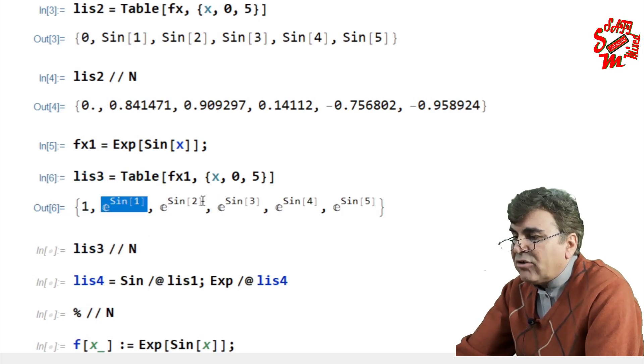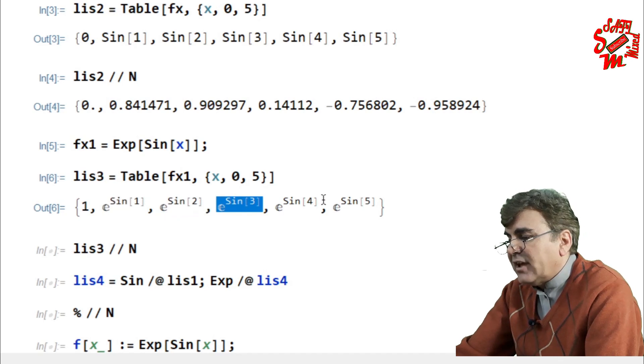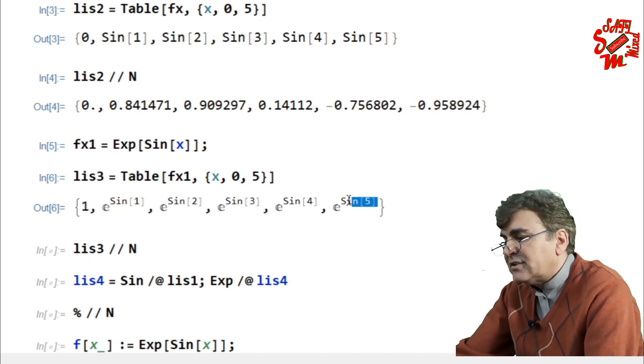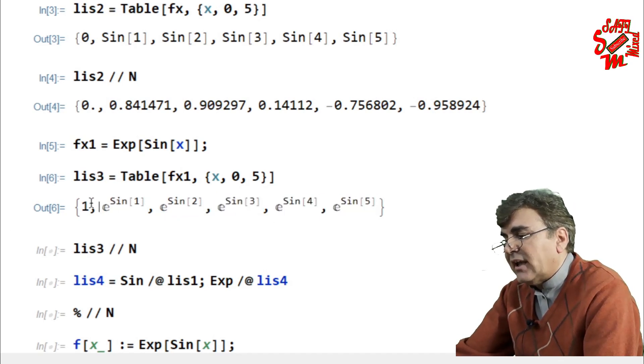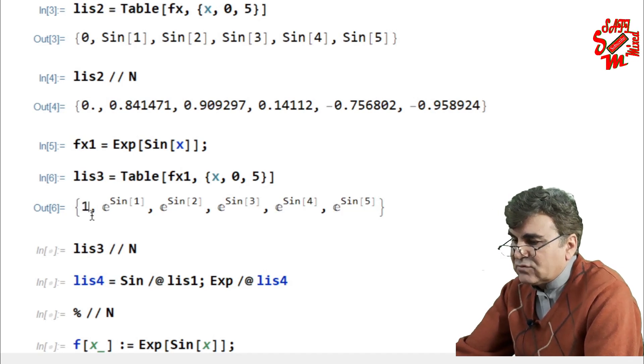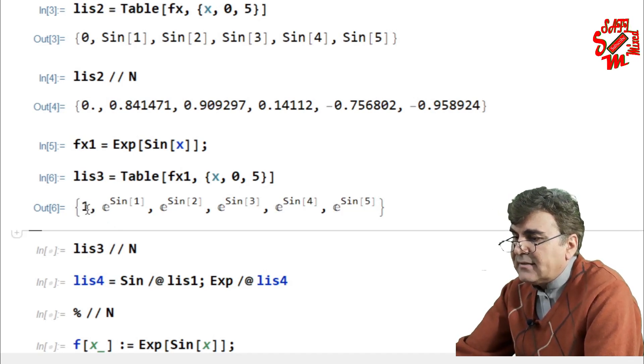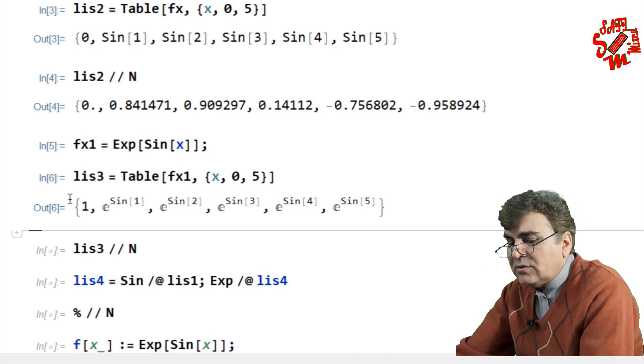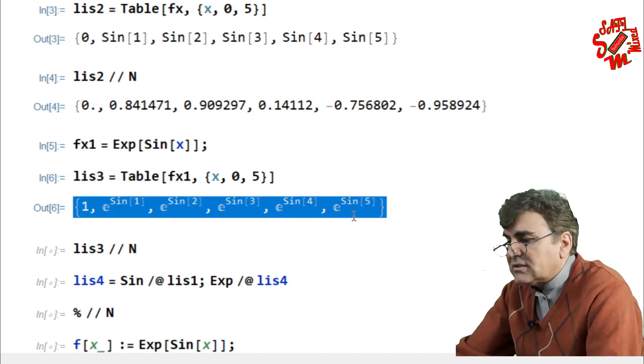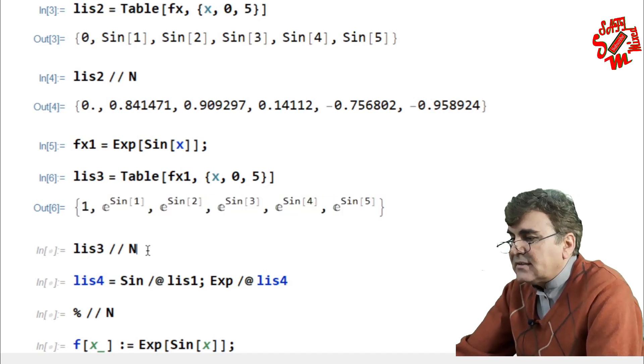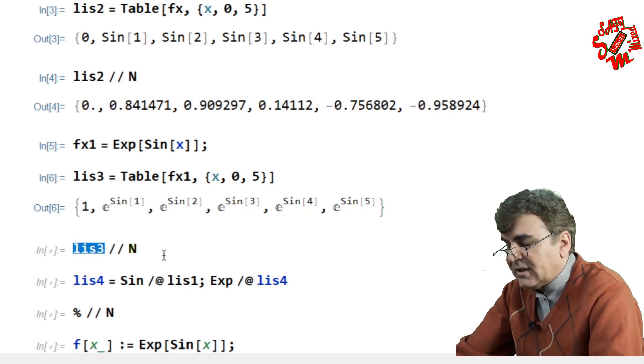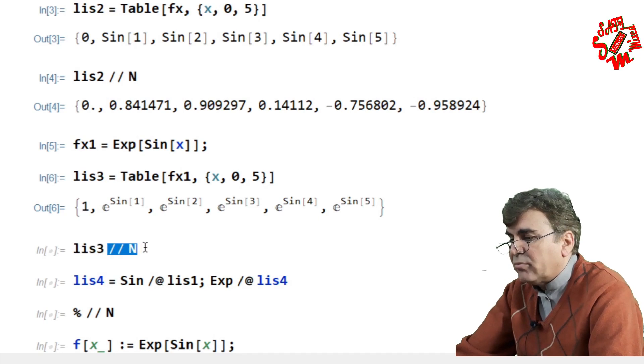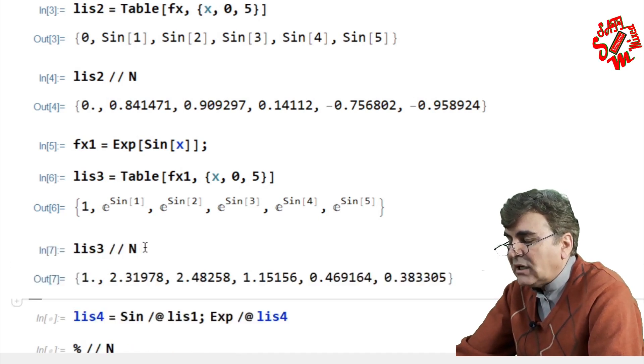Every element of the list is exponentiated. Here we have one because sine of zero is zero and exponent of zero is one. So this way I can assign different functions to each element of the list. And if I want to find the numerical value I just have to replace the name of the list followed by two forward slashes and the capital N which is a command for numerical values.